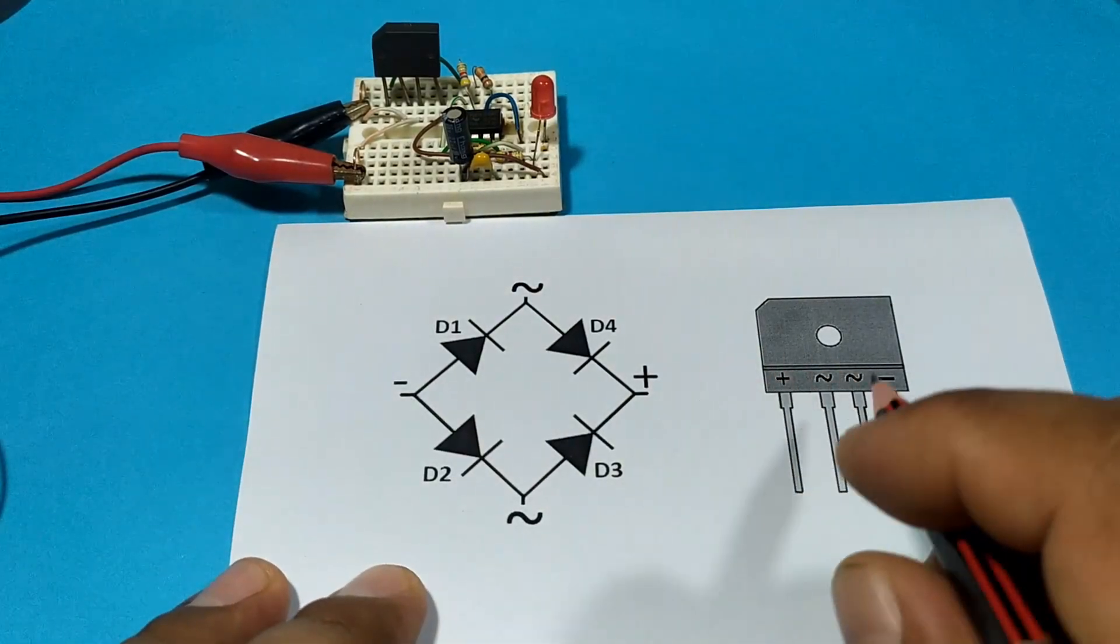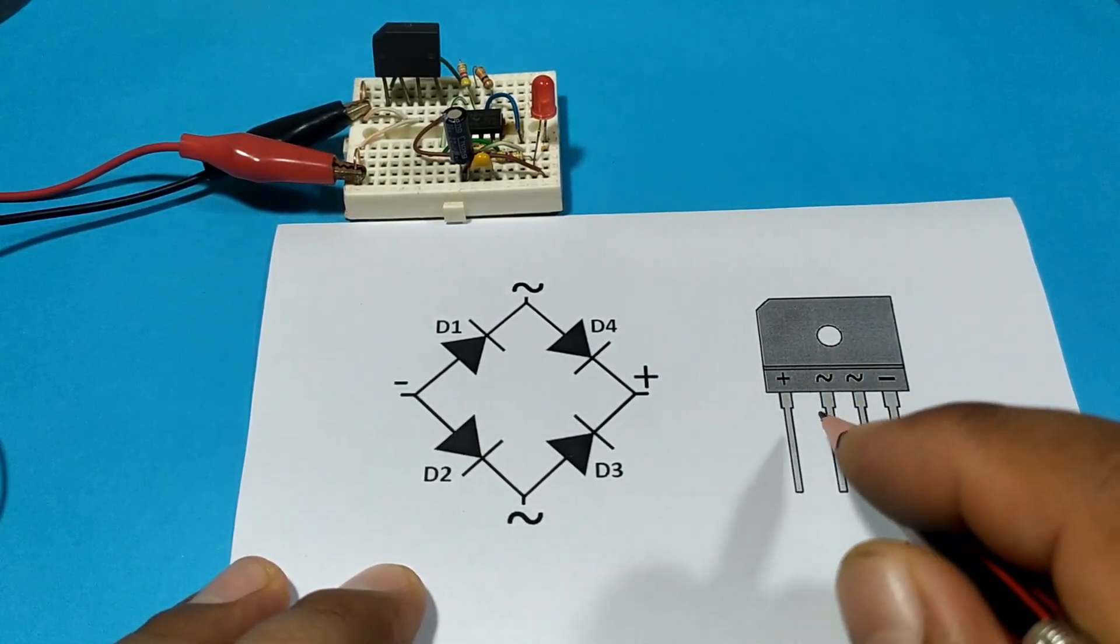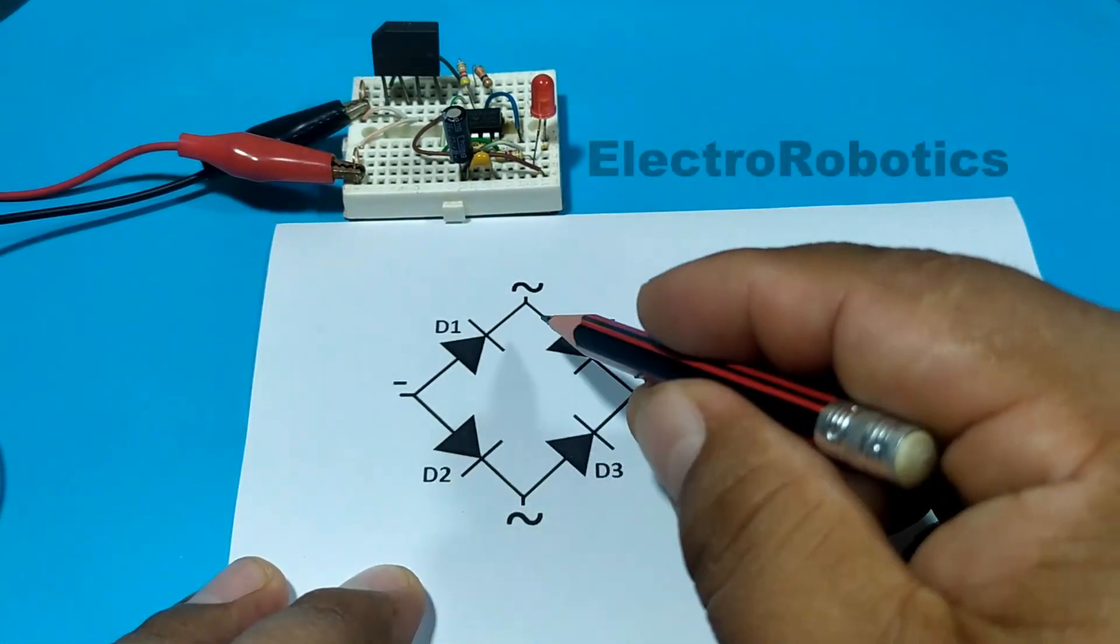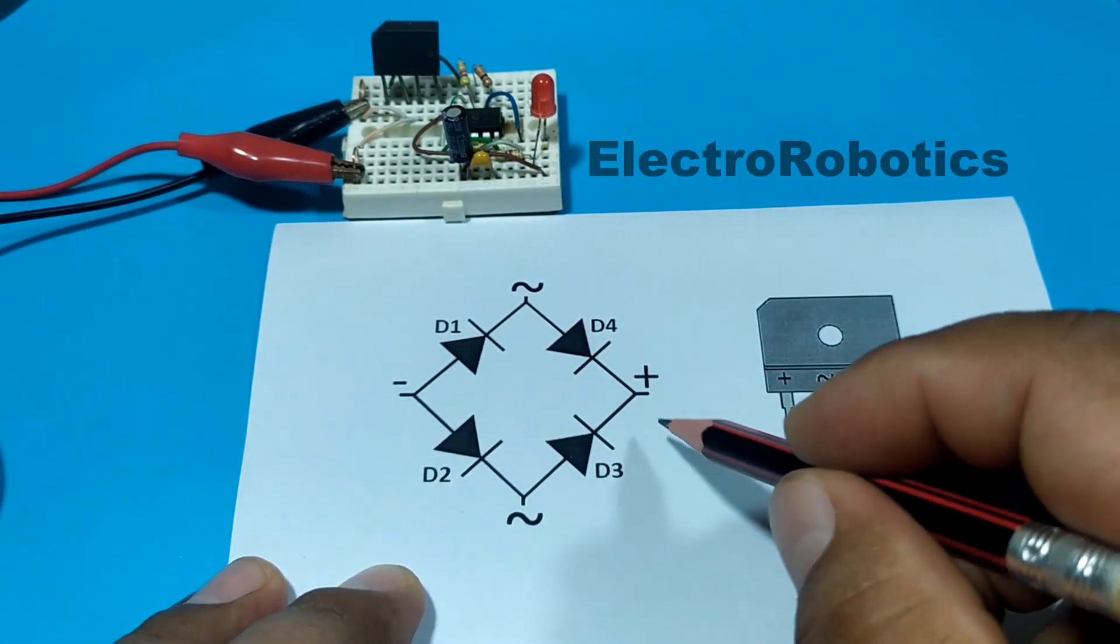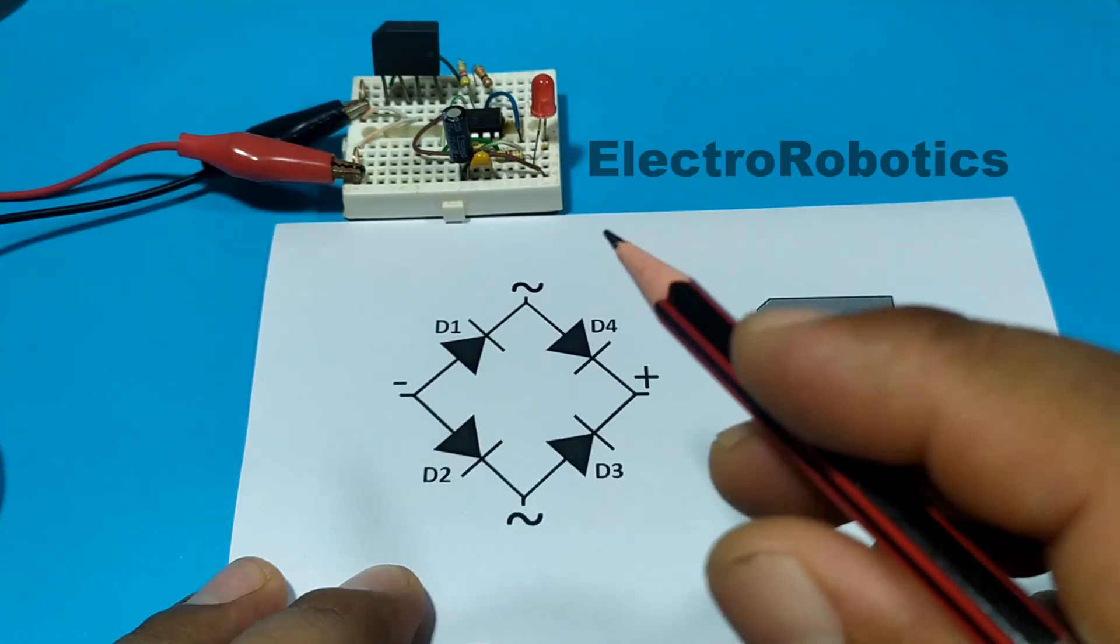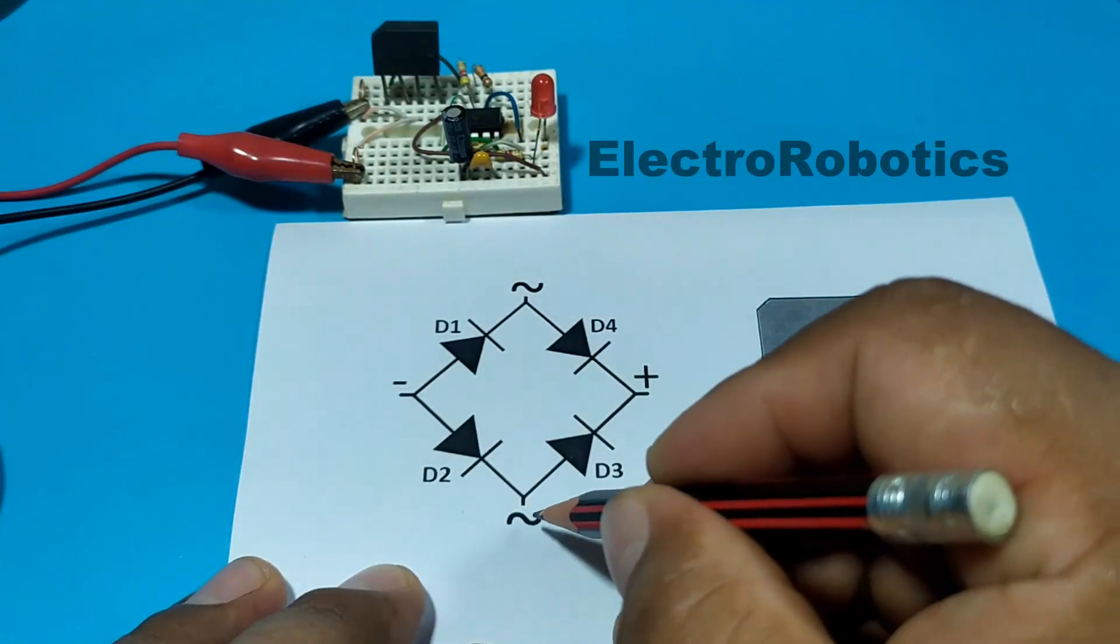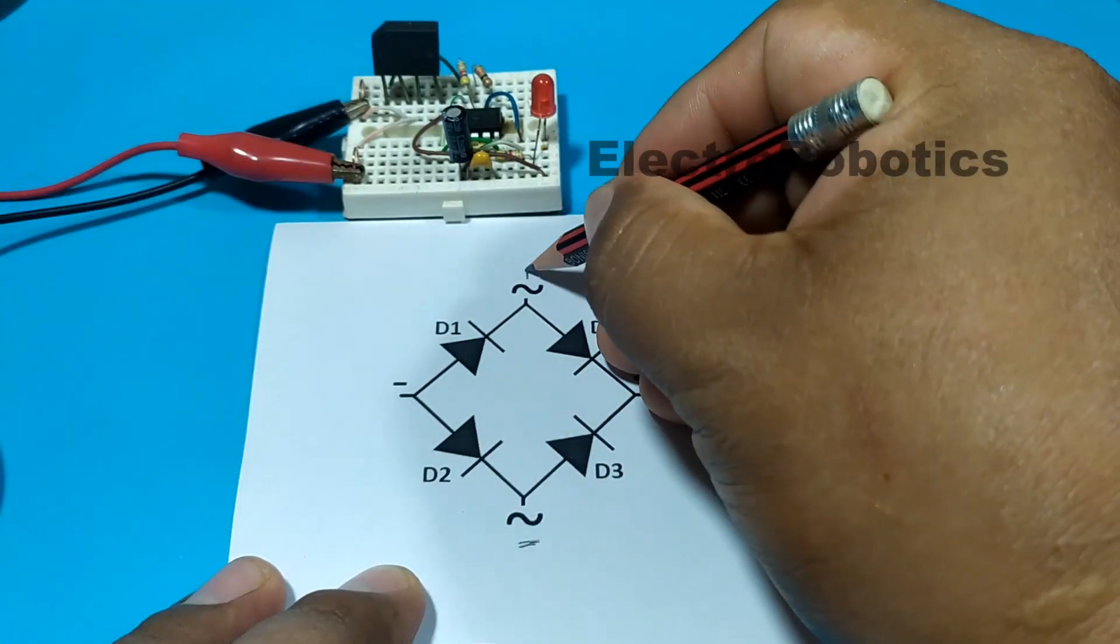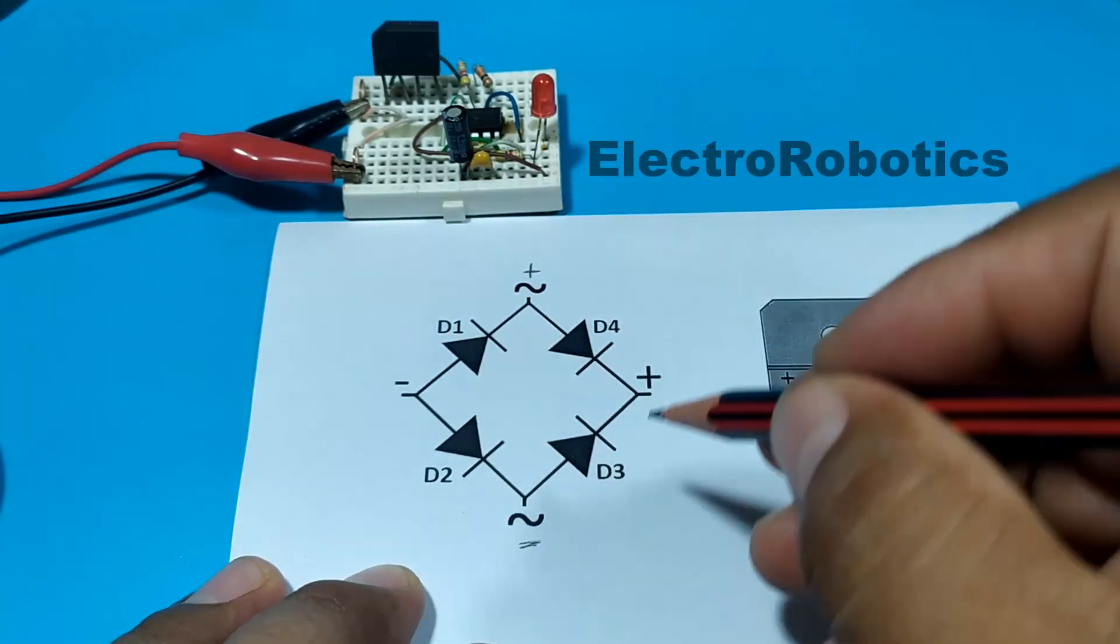Now this circuit is working based on the diode bridge. The alternating current inputs would be the positive and negative power inputs. The outputs would be positive and negative respectively. Therefore, if we put negative down here and positive up there. Now what happens?